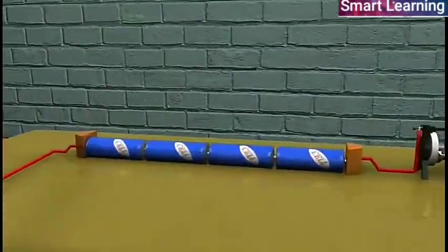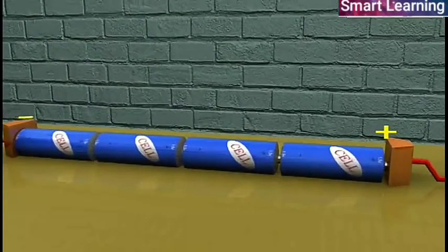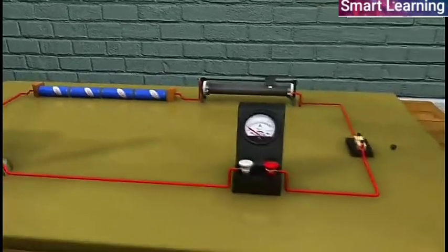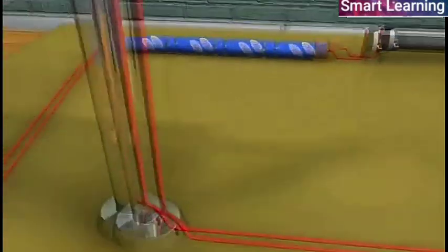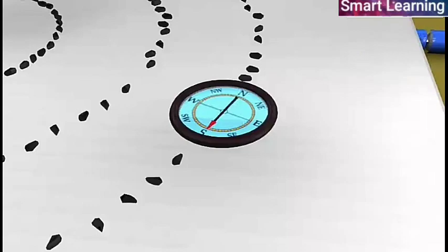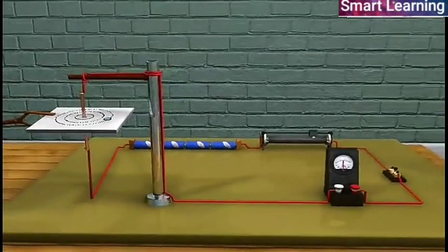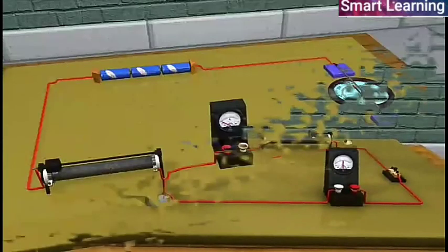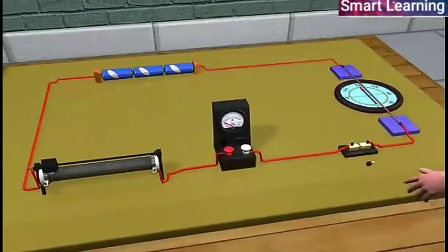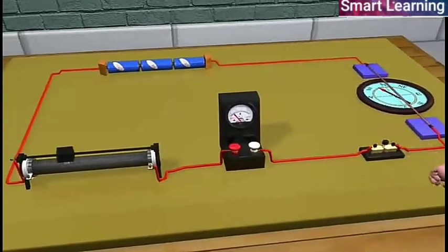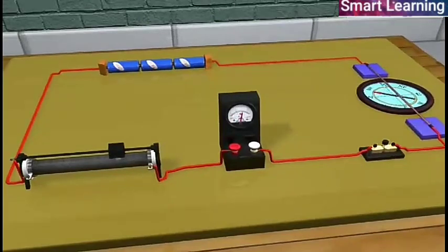When we change the direction of the current in the copper wire, the direction in the compass needle placed at a given point also changes. Now increase the current in the copper wire. The deflection in the compass needle also increases. This indicates that the magnitude of the magnetic field produced at a given point increases as the current through the wire increases.